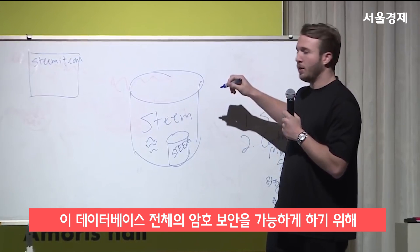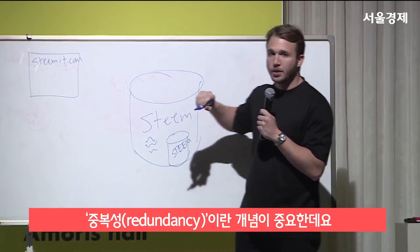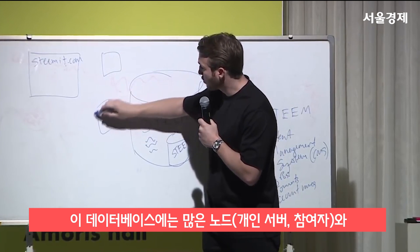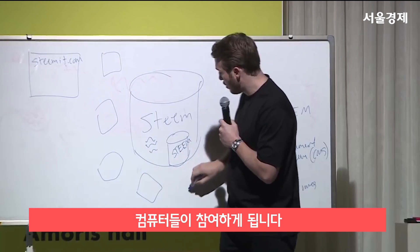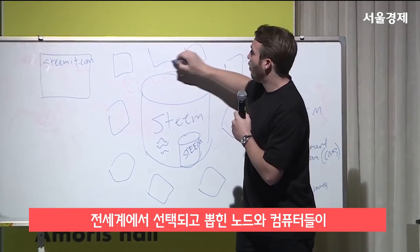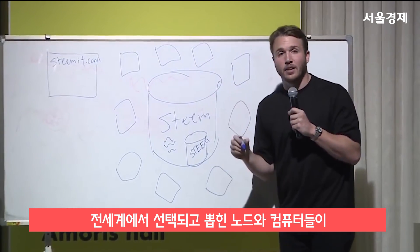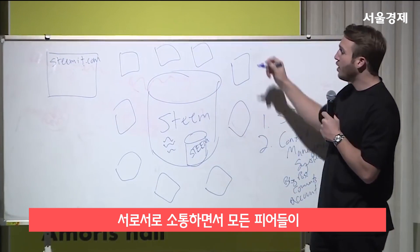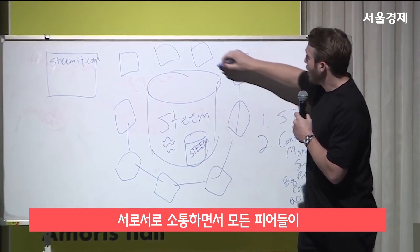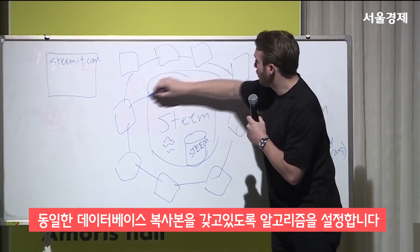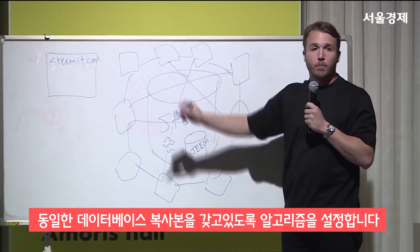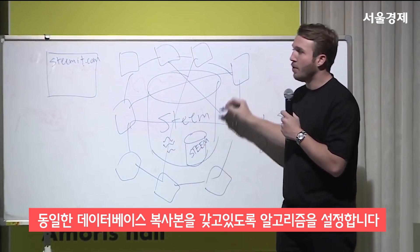To make the cryptocurrency possible inside this database, there needs to be redundancy. And the way that happens is you have a series of nodes or computers that are run by a selected and elected group of individuals from around the world. They run these nodes and they communicate with each other in set algorithmic ways to make sure that every one of their peers is running the same copy of this database.